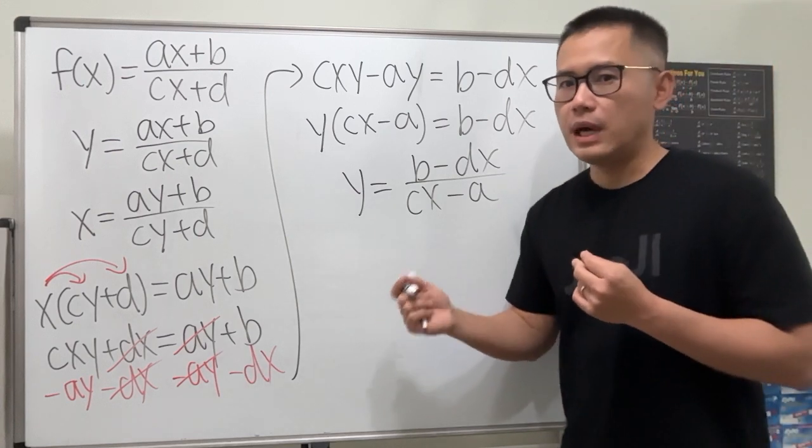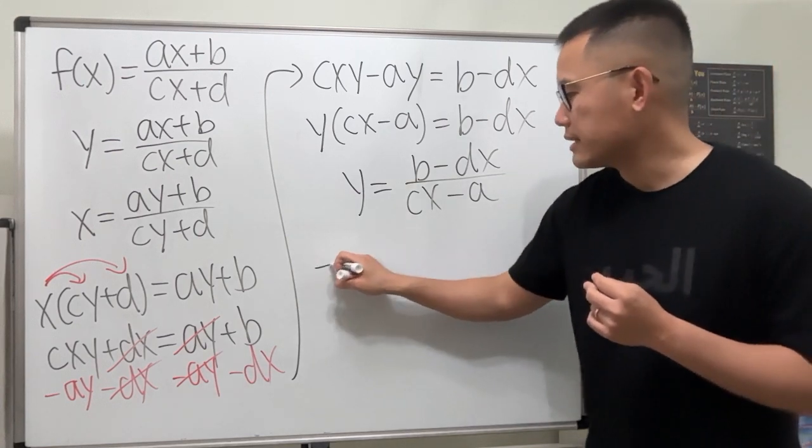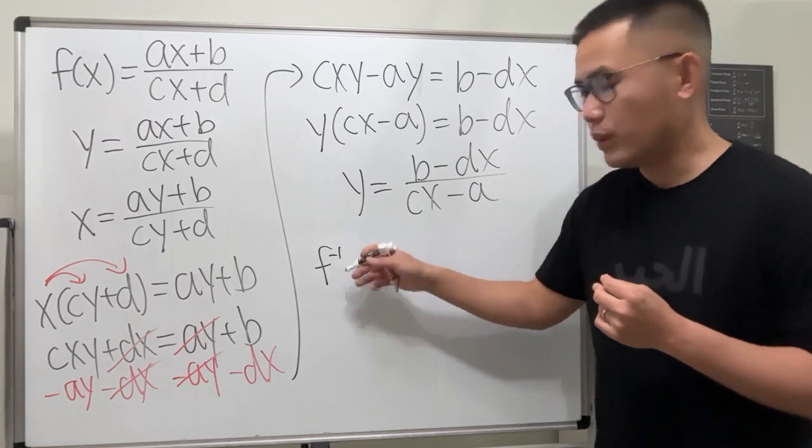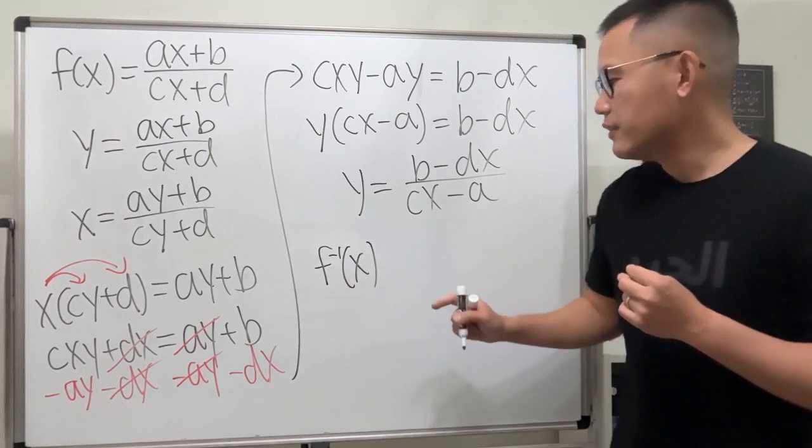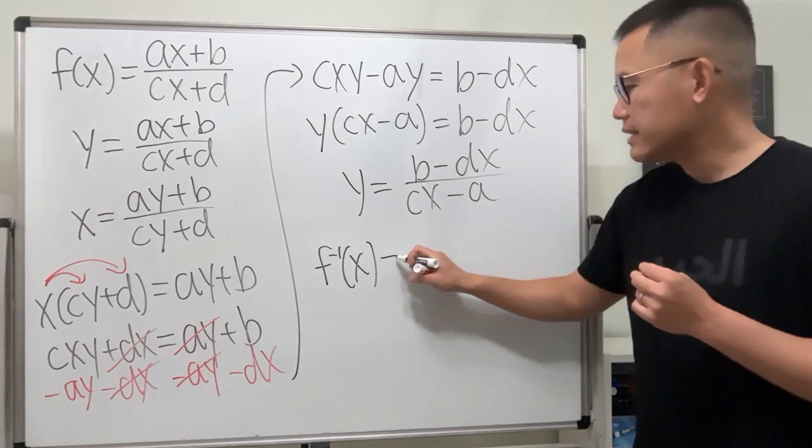And this y is precisely our inverse. So I'm going to rewrite that as our f with a negative 1 notation for the inverse function. This means the inverse of f.